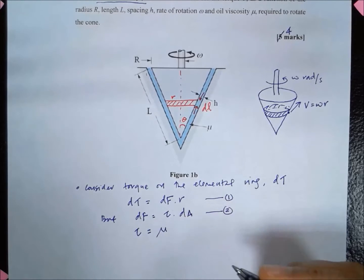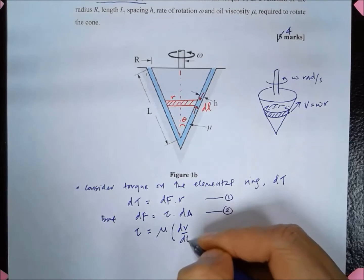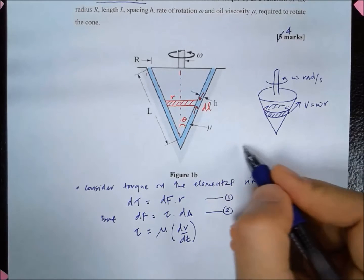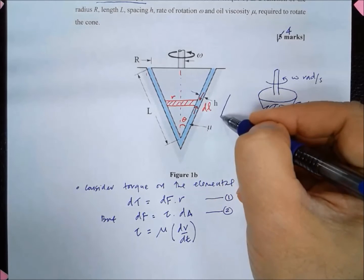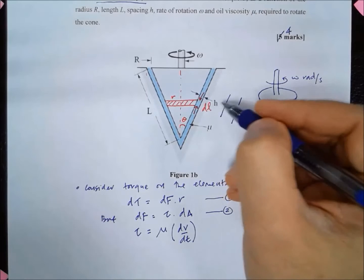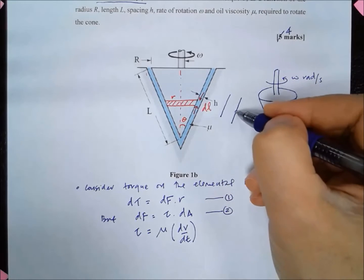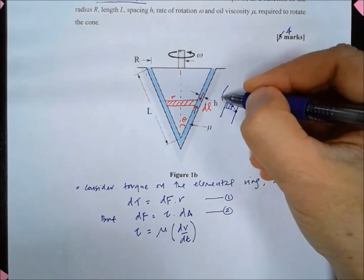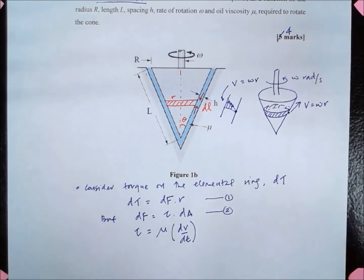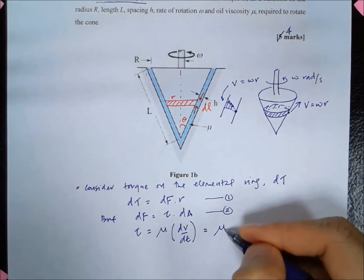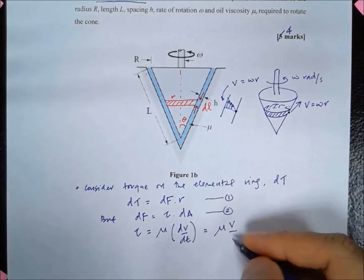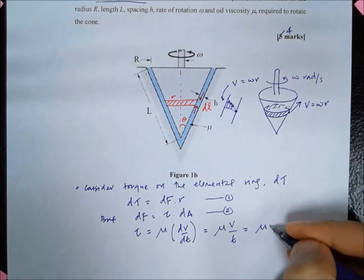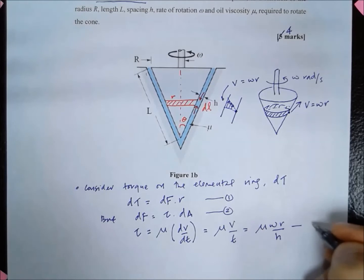The shear stress tau is equal to mu multiplied by dv over dt, where dt is the spacing. Considering the velocity gradient: the point in contact with the container has zero velocity, whereas the point in contact with the cone has velocity v equal to omega times r. So the shear stress is equal to mu times v over h, which gives us tau equal to mu times omega times r over h. Let's call that equation 3.